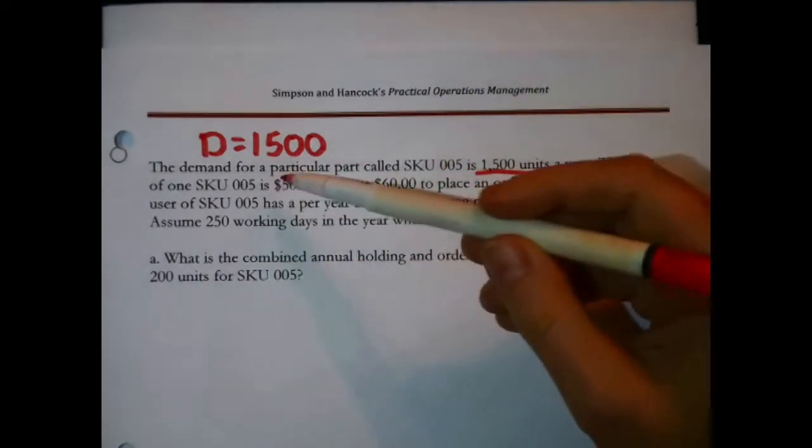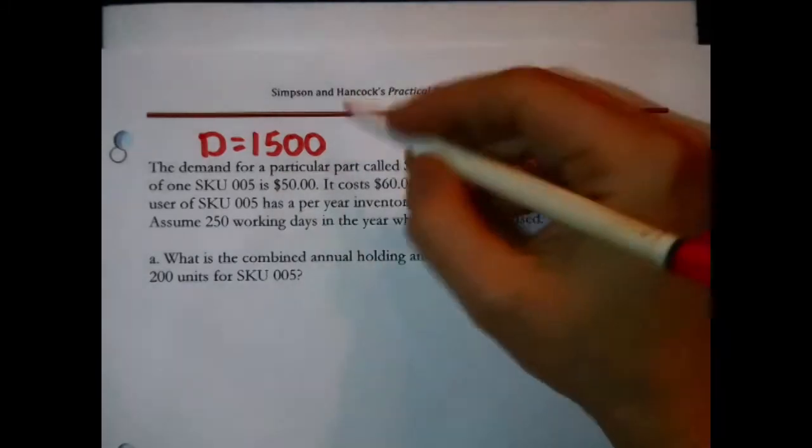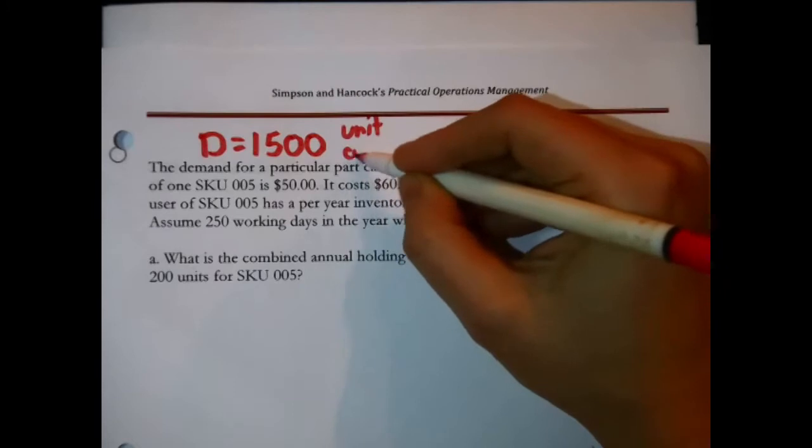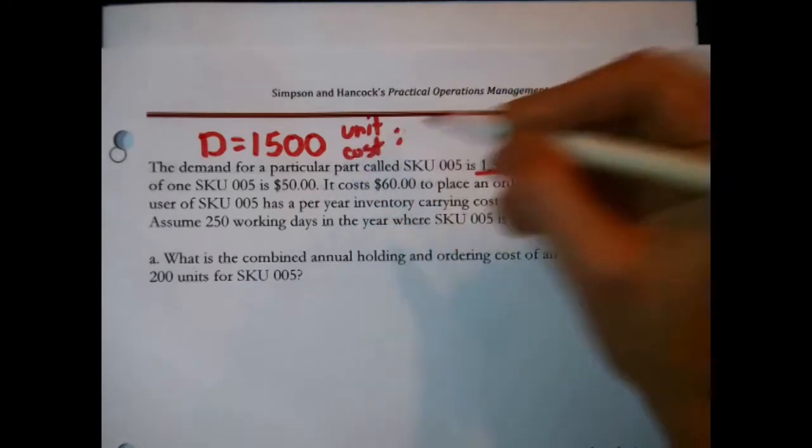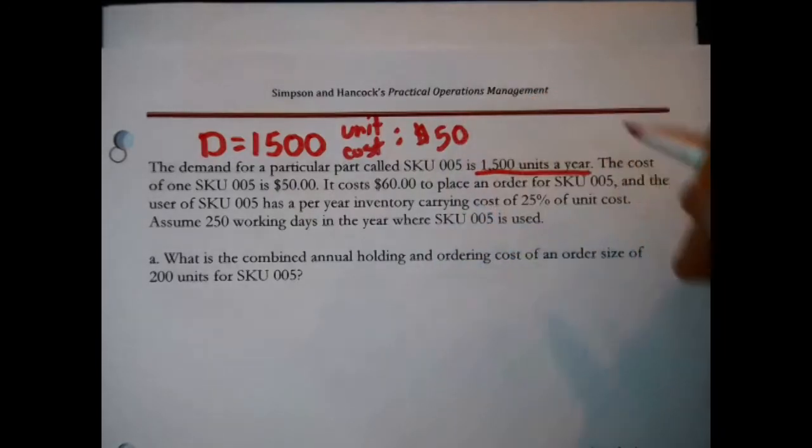The cost of one SKU005 is $50. Interesting. Well you don't necessarily need that, unit cost or purchase cost in the EOQ model, but I will note that.